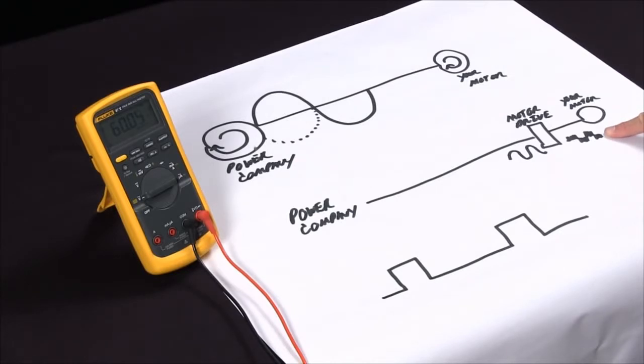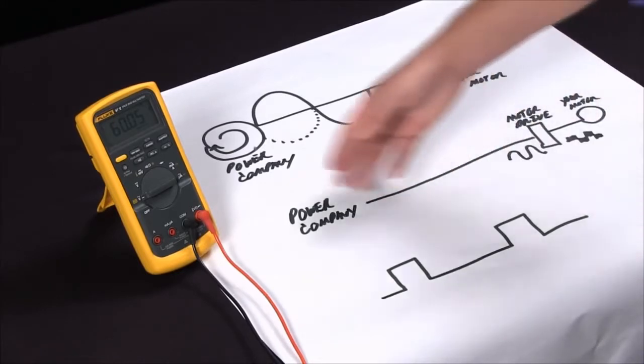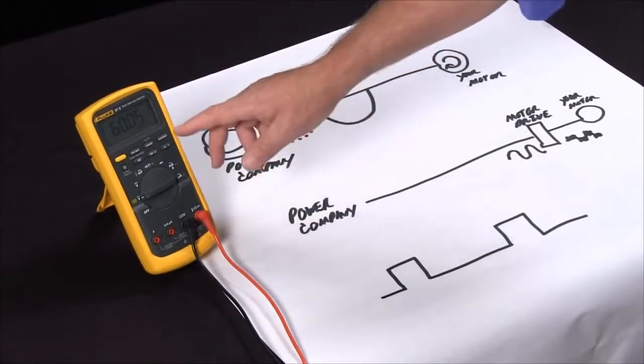half speed at 30 Hertz, quarter speed at 15 Hertz. So that's a useful addition that we've put into all our new Fluke 87 multimeters with the Hertz and the duty cycle function.